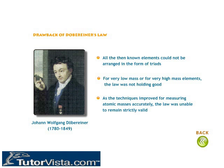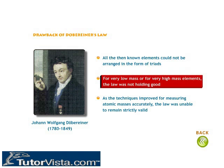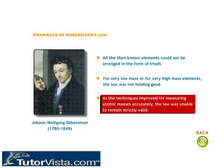Dobereiner's Law of Triads failed for the following reasons: all the then known elements could not be arranged in the form of triads. For very low or very high mass elements, the law did not hold good. As techniques improved for measuring atomic masses accurately, the law was unable to remain strictly valid.